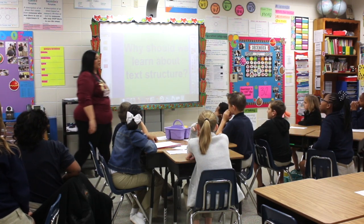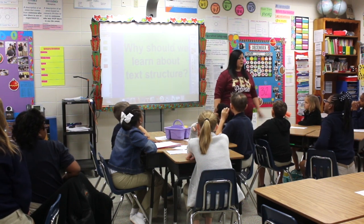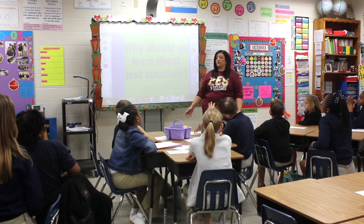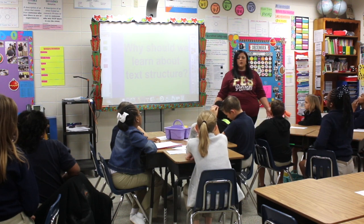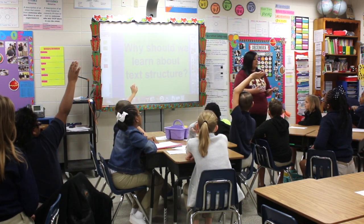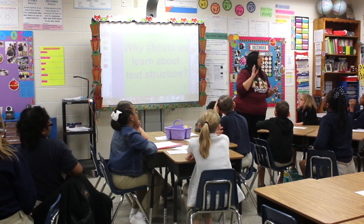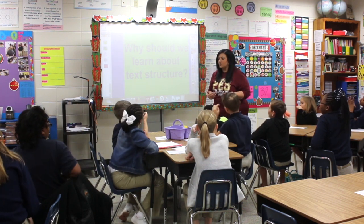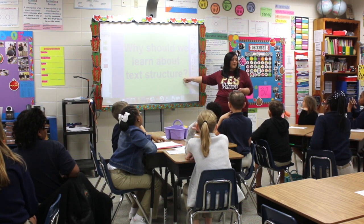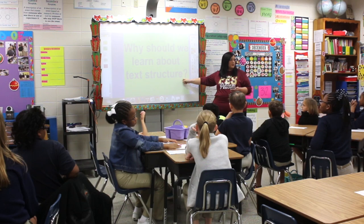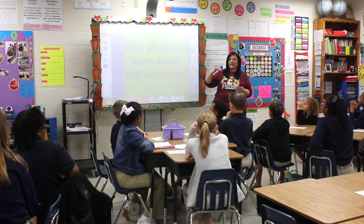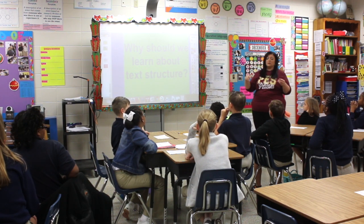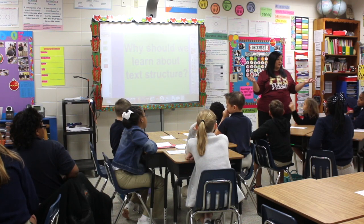A lot of kids ask, why do we have to learn this? Guys, text structures are important. You need to be able to know what you're reading about — that's what text structures are going to do for you. If you want to be a chef, you're going to have to deal with a lot of recipes and steps. A recipe is written in chronological order, so that is going to help you in the future. And problem and solution — we have to learn how to deal with problems every day and how to solve them.